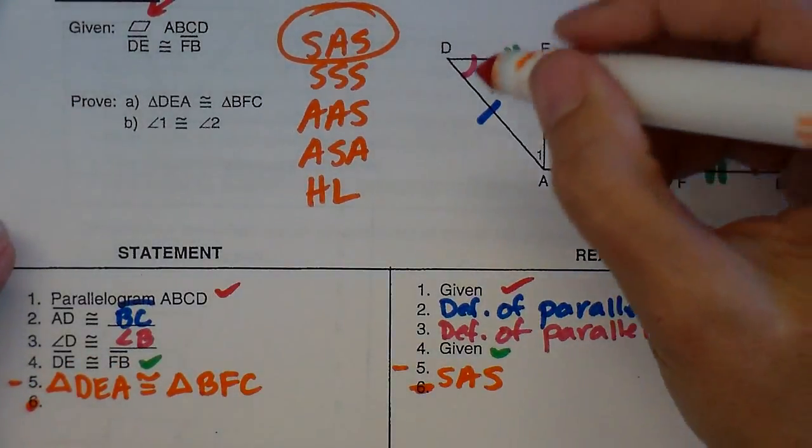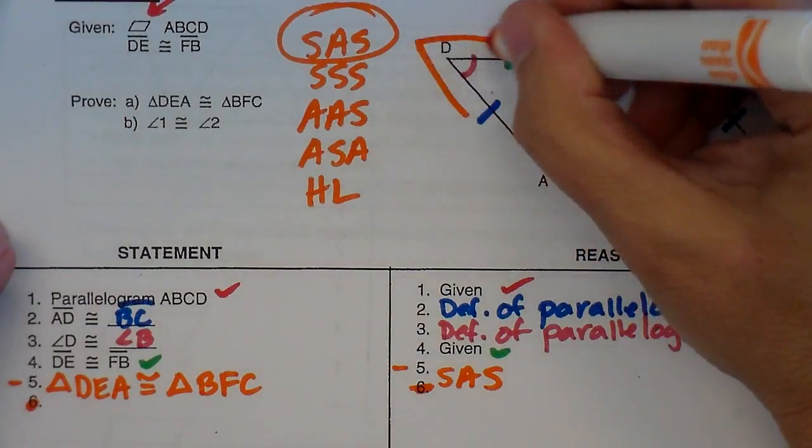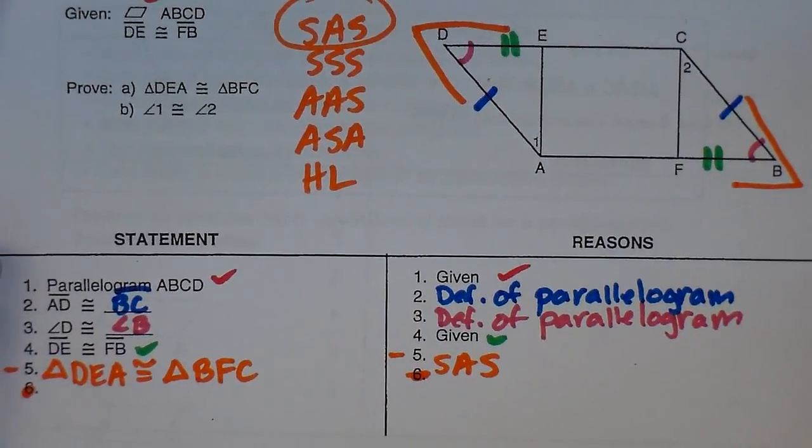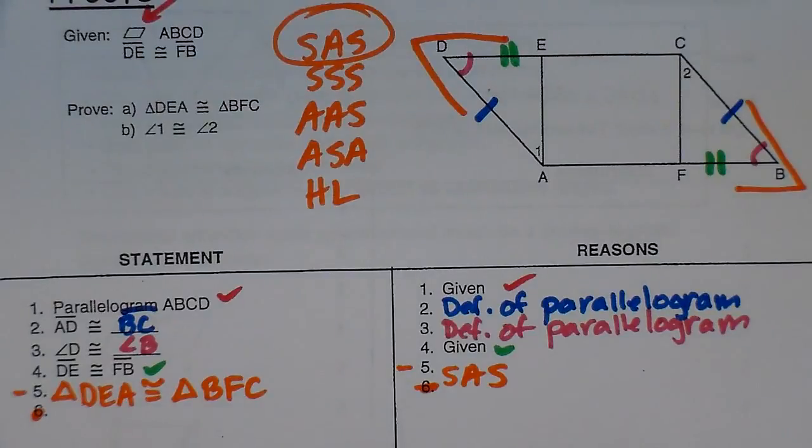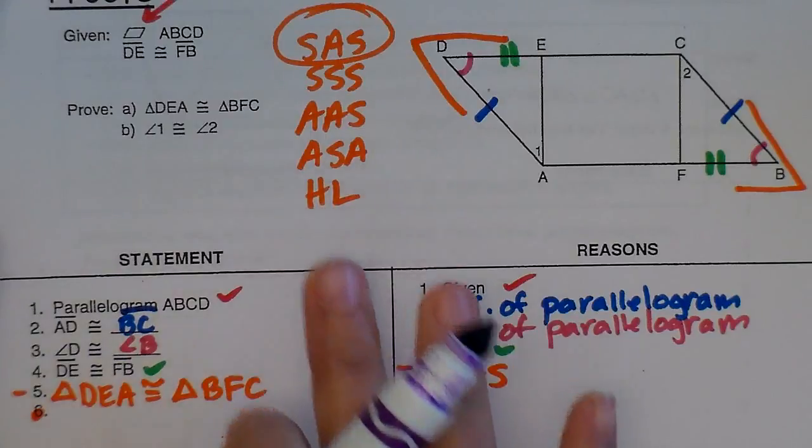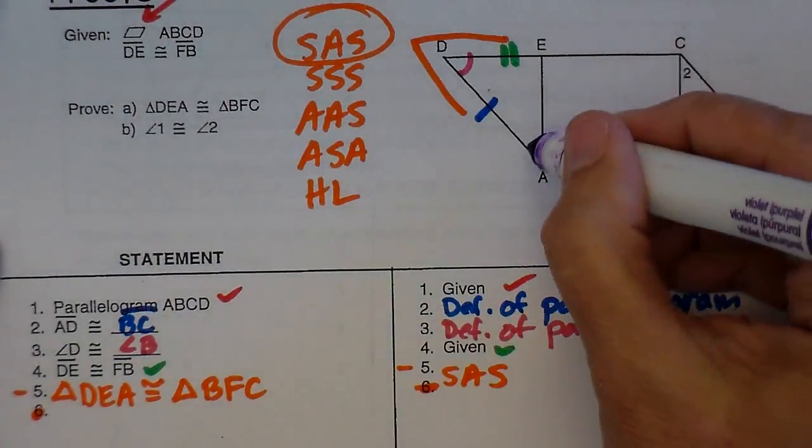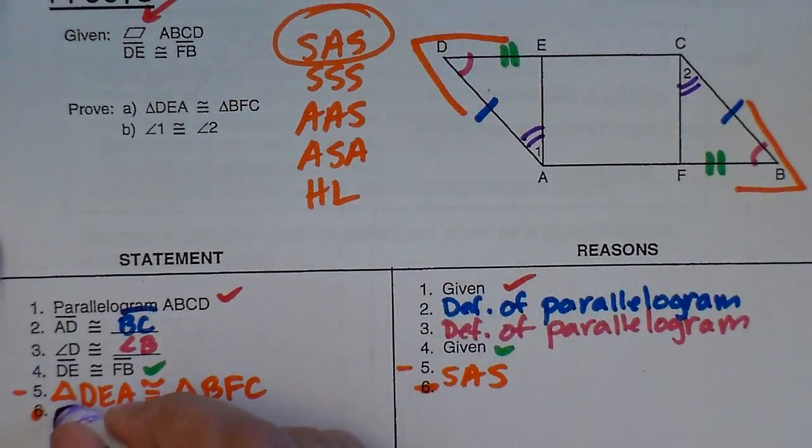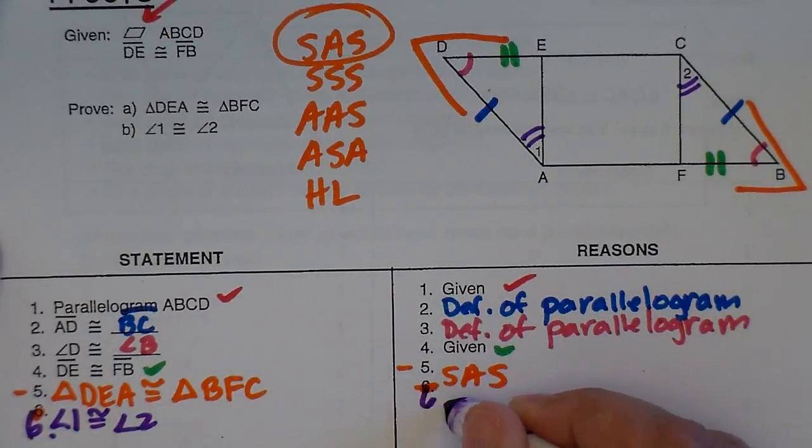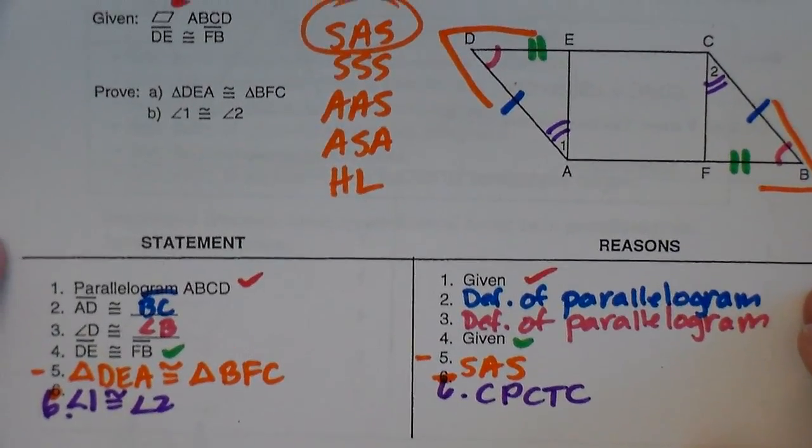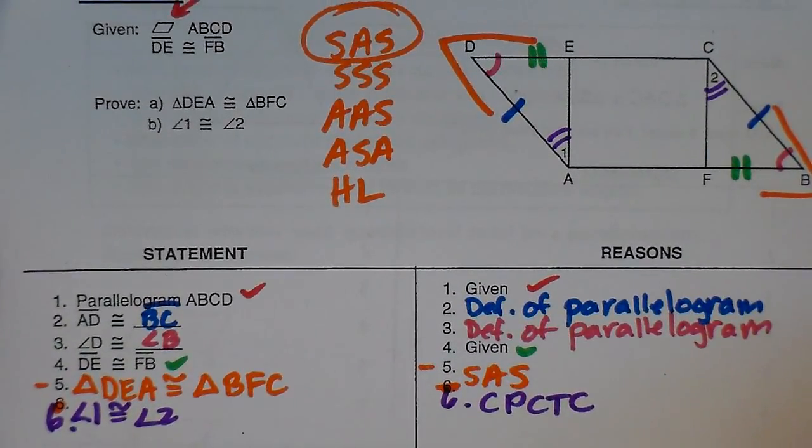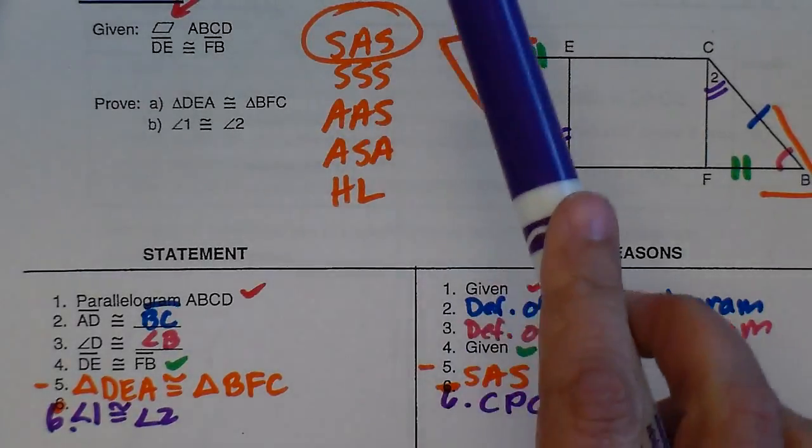Do you see the side, angle, side? I went blue to red to green. Blue to red to green in the same sequence. So that's enough to tell me that the entire set of triangles is congruent. Now that I've established that the two triangles are congruent, I know all of their other pieces are congruent. Angle one and angle two must now be congruent, and that's by CPCTC. Corresponding parts of congruent triangles are congruent.